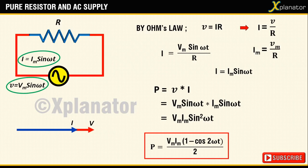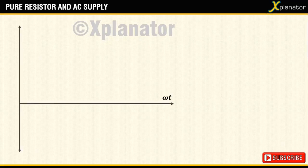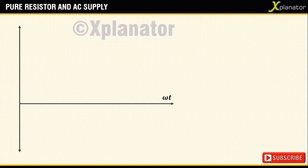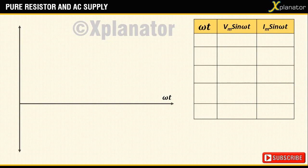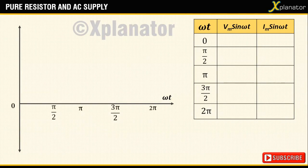Now that we know the equation for power, let's plot the curve. Consider an XY plane with omega t, that is the angular frequency, on x-axis. Draw a table to plot the voltage and current waves. Mark the values of omega t on x-axis, voltage and current on y-axis.